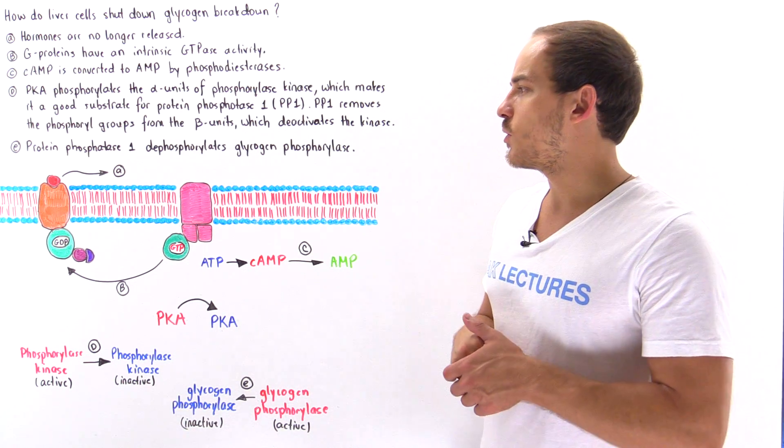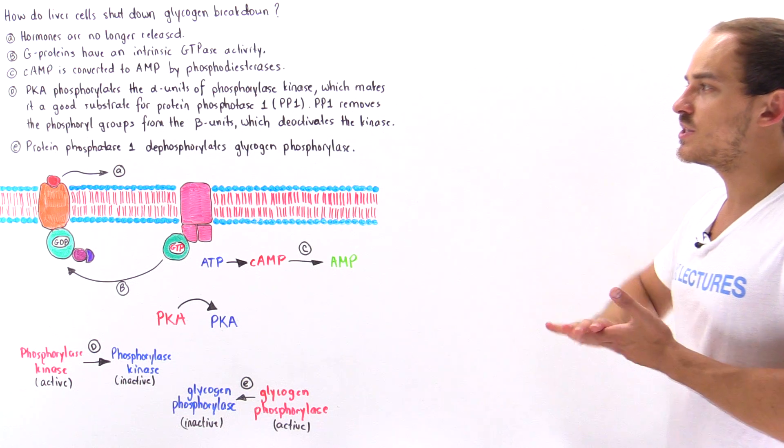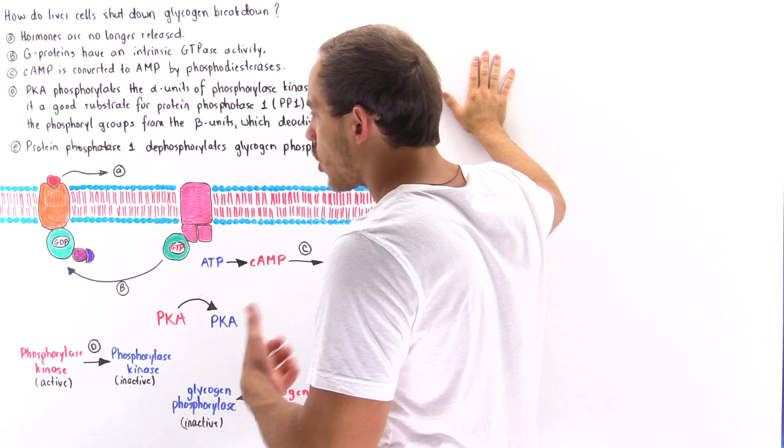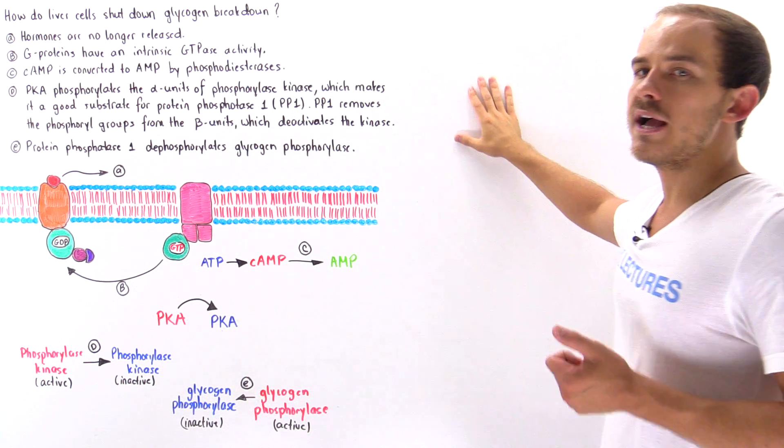This is what I'd like to briefly focus on in this lecture. We're going to examine five different ways by which liver cells of our body are capable of shutting down glycogen breakdown.